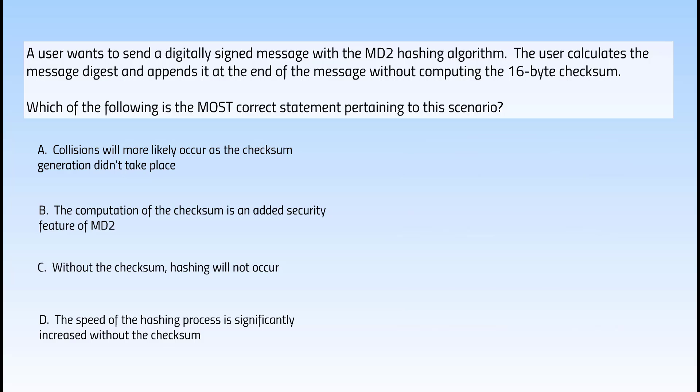Instead of just memorizing that SHA-1 has a 160-bit hash instead of 128 bits, or that it has variations like 256, 384, and 512 bits — the CISSP exam is not going to ask you that directly. It's not going to ask how many variations of SHA there are. What it's going to do is present you with a scenario question where you'll be expected to know why SHA exists, why MD4 isn't used, why MD2 isn't used, and why we have hashing altogether. This is what is meant by a high-level exam. That's what the CISSP is.